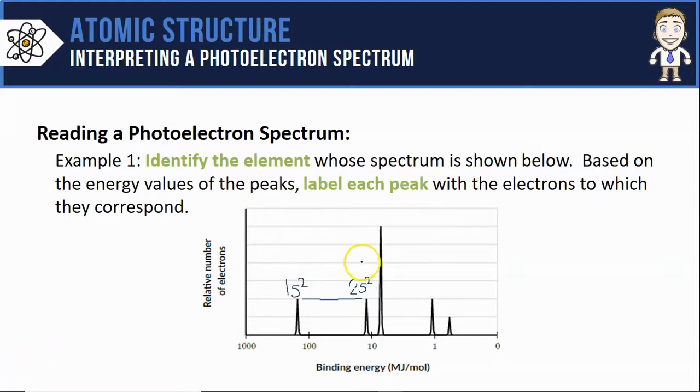The third peak is three times as high as the first two, so contains three times as many electrons, or six. That means this peak corresponds to the 2p orbitals containing six electrons.